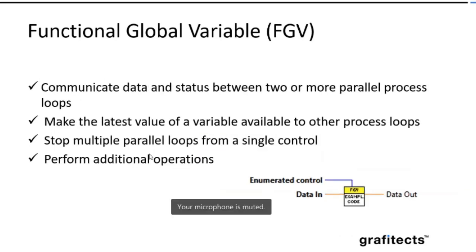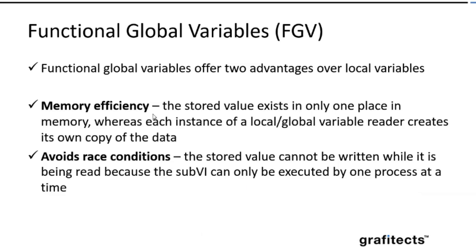These are some use cases for functional global variables. You can able to use this to communicate data status and many more things between different loops, and the latest value will be available if you're using it. You can use it to stop parallel loops that is running, and as I said, you can able to increase activities or additional steps that need to be performed within the functional global variables. These are two advantages that I found when we are using functional global variables over local variables. One is memory efficiency. The stored value exists in only one place, whereas in local variable, it is creating a lot of data buffers and copies of the data. This is how it's the correct way to avoid race conditions that is happening when you are using the local variables.